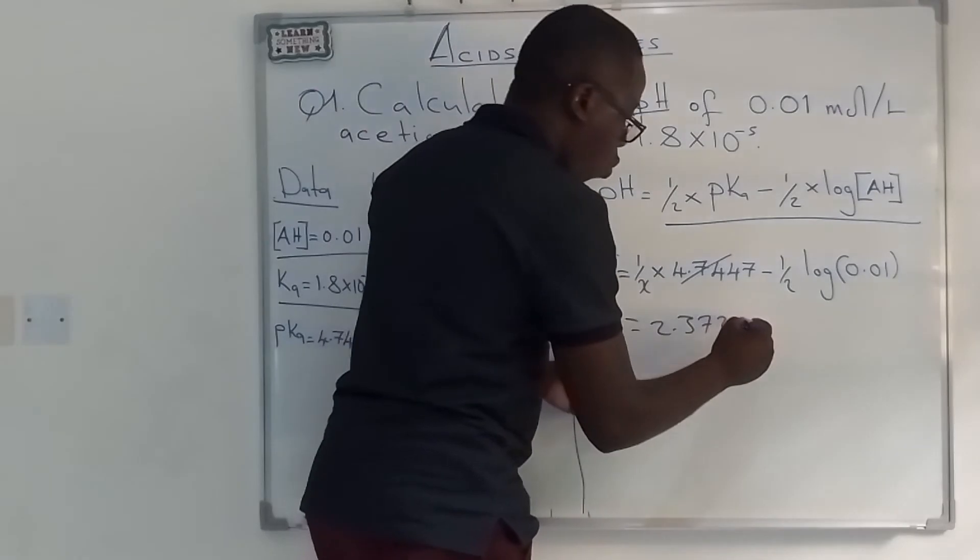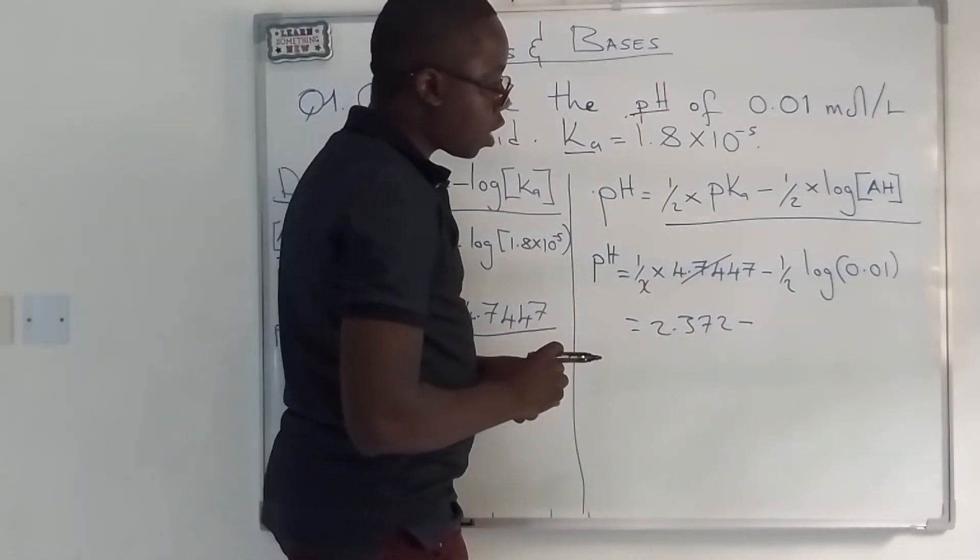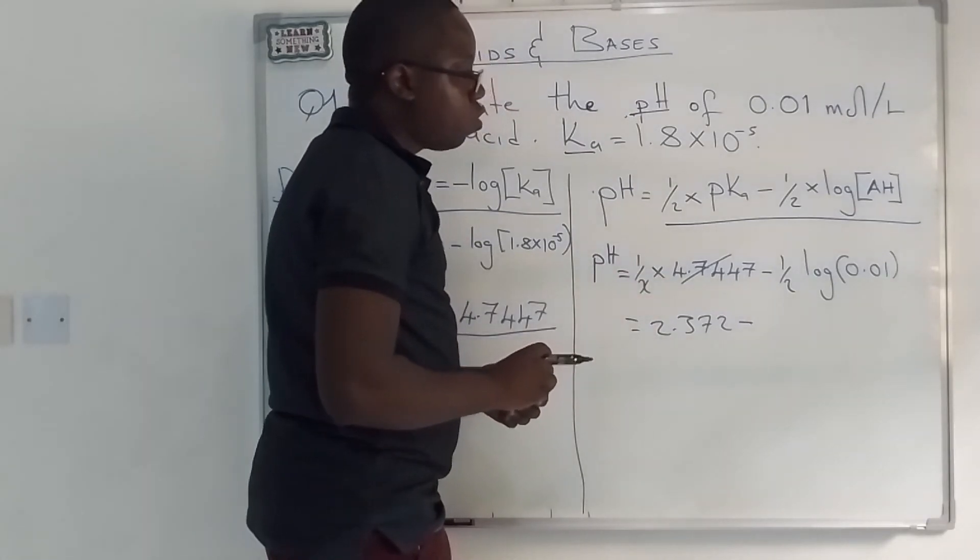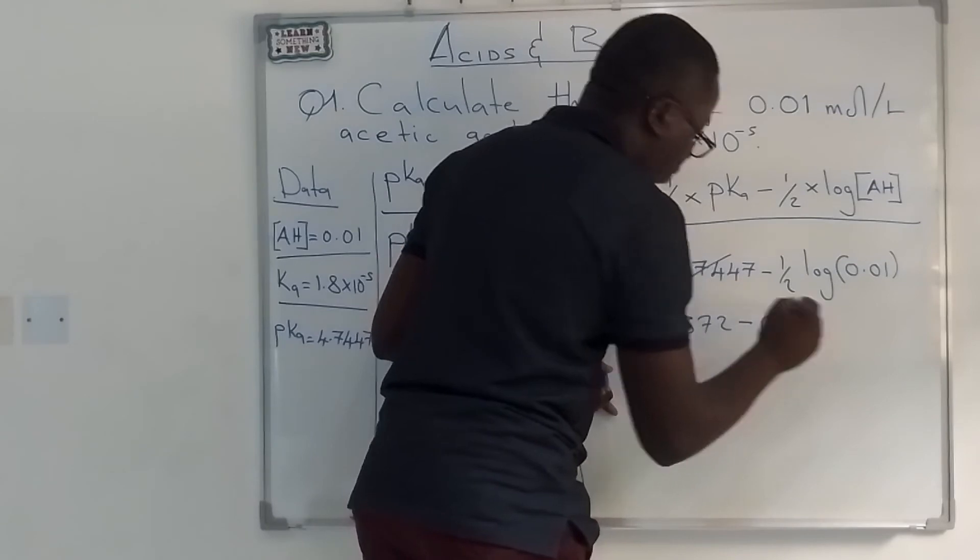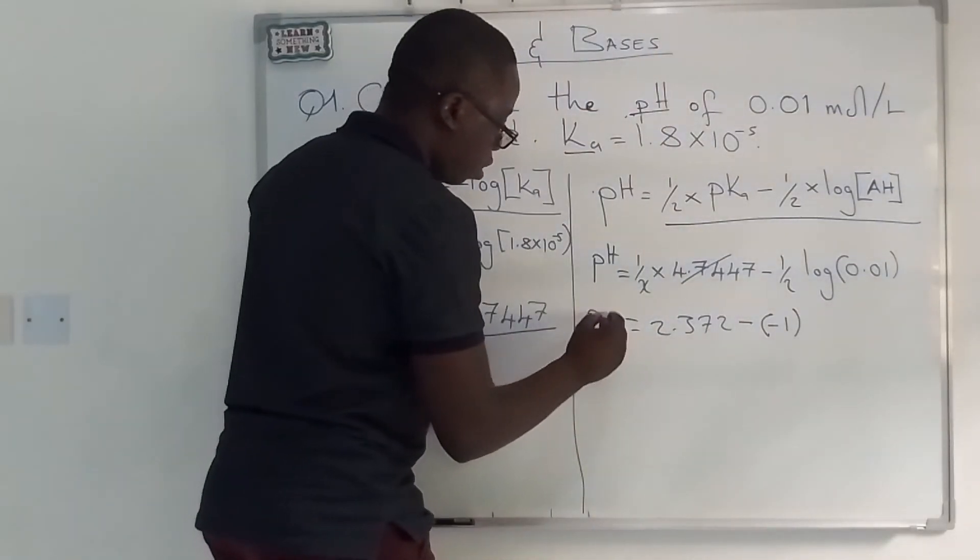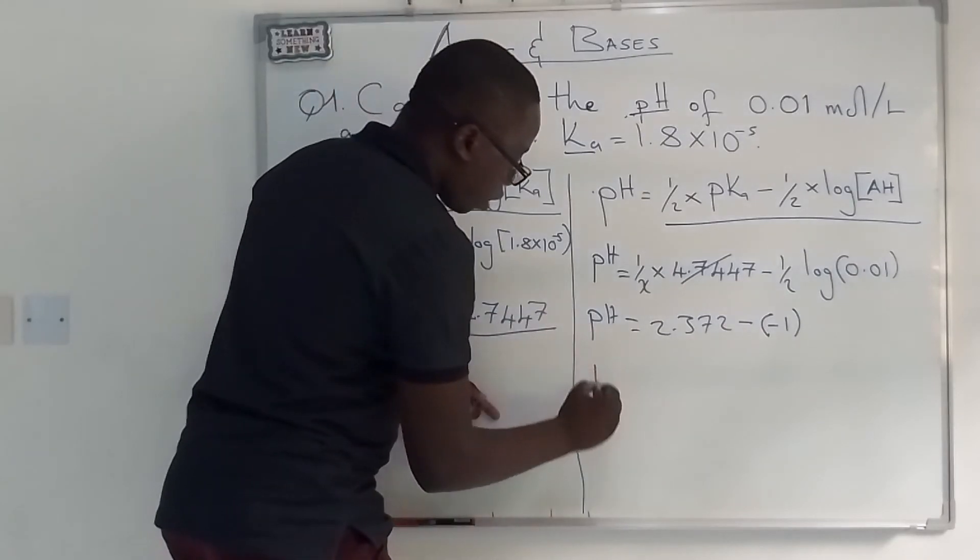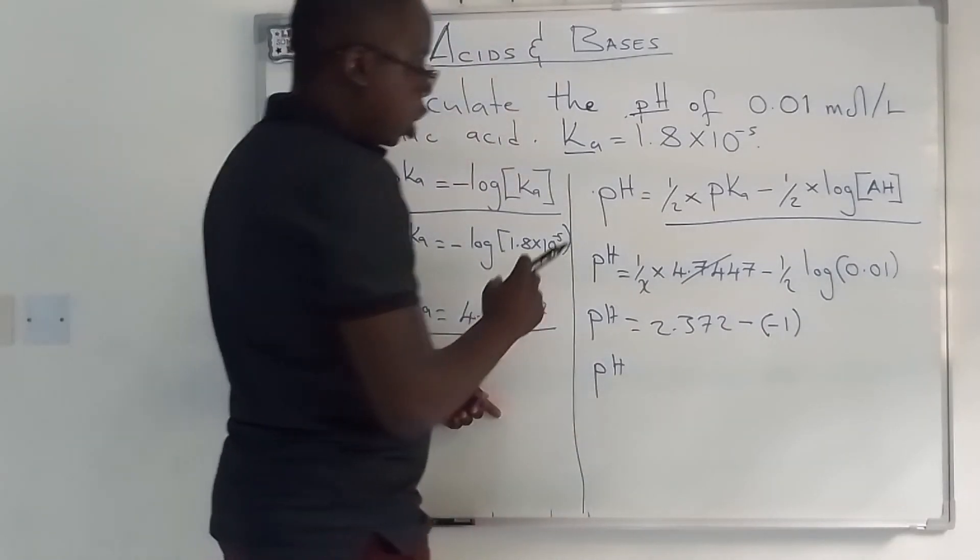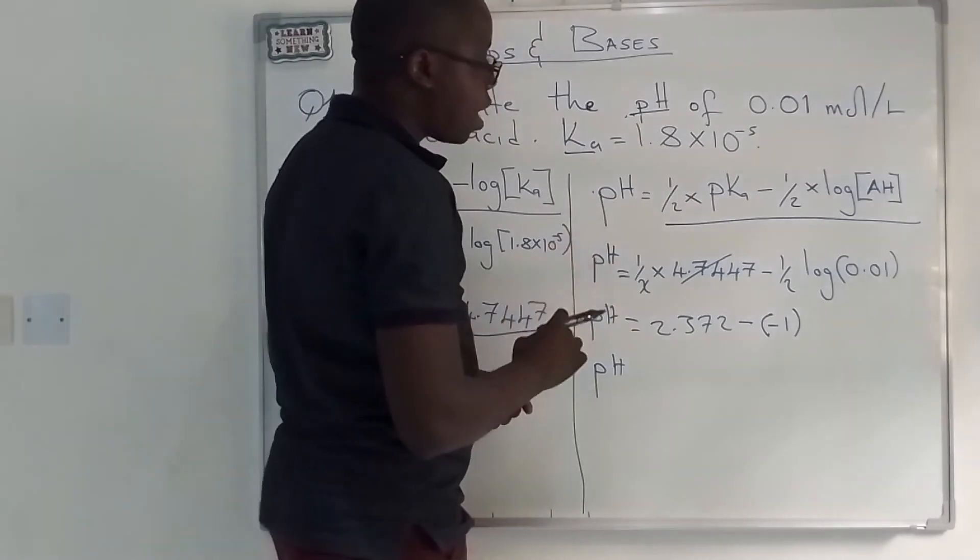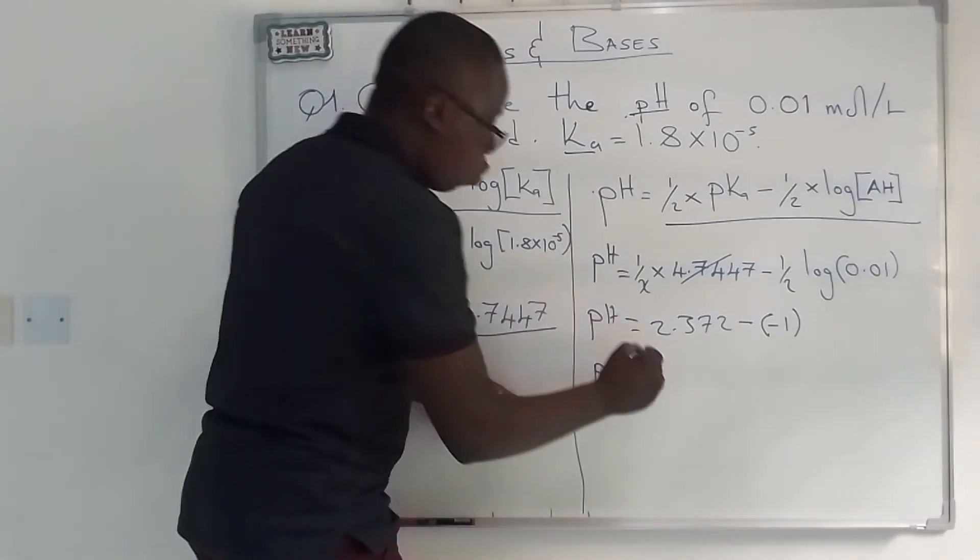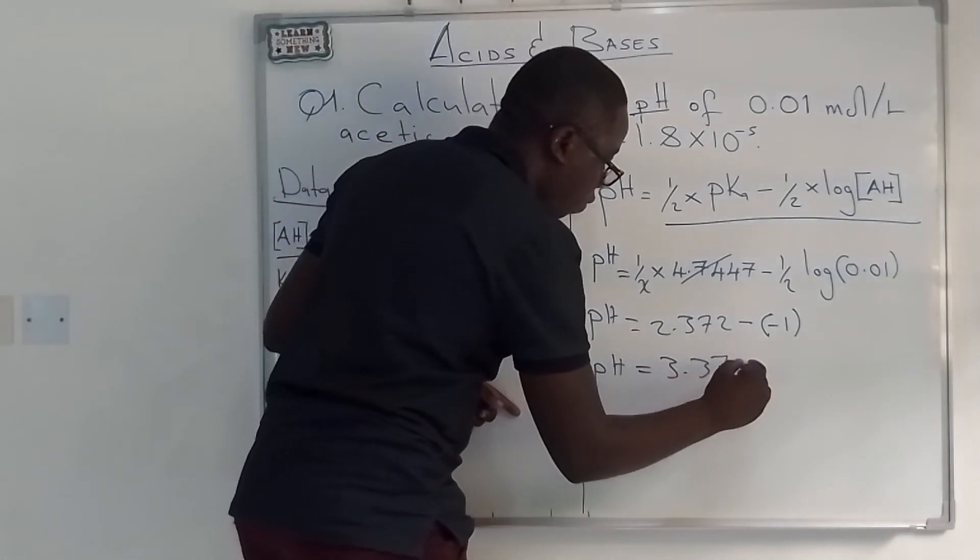And then, when we punch on the calculator, half of log of 0.01 should give us negative 1. So this is the pH we are calculating. So we'll now say that pH will be equal to 2.372 minus negative 1, which gives us 3.372.